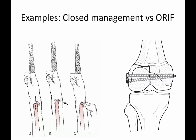Growth plate fractures are frequently treated with closed management. Here's an example of a very displaced type 1 distal radius Salter-Harris I fracture treated with traction. With traction, the bone can sometimes immediately go back in place, or with a little force from a thumb, can be gently pushed back. If you have an articular fracture — such as a distal femur Salter-Harris type 3 — you do not want a big step-off incongruity at the joint surface, so you reduce it and perform open reduction internal fixation.